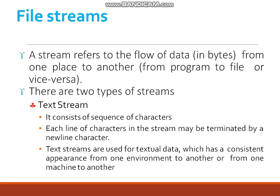There are two types of streams. The first is a Text stream. A text stream consists of a sequence of characters. Each line of characters in the stream is also terminated by a new line character. Text streams are used for textual data which has a consistent appearance from one environment to another, or from one machine to another.